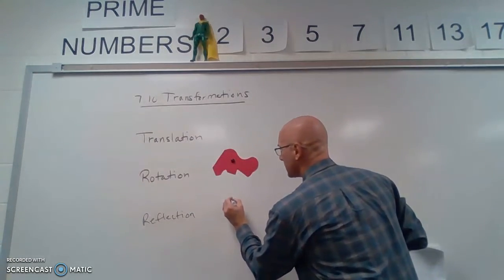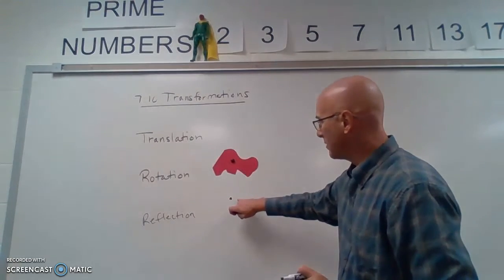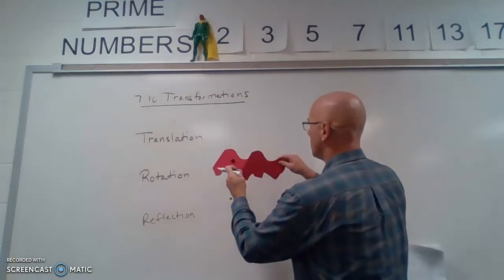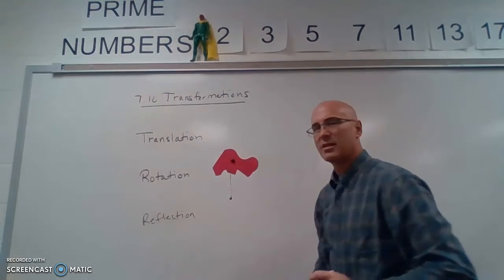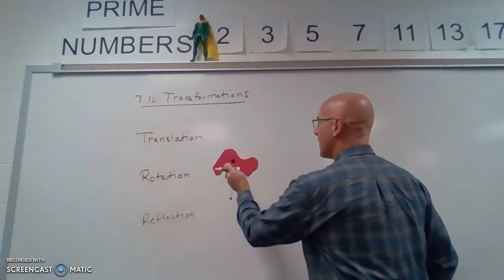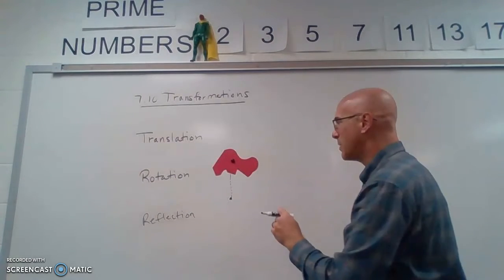So what it does is we have a point, like a focus point, a point of rotation. And what we do is we need to think that it is imaginary tied to that point. And then we are going to spin it kind of like a bike tire. We're going to spin it around.